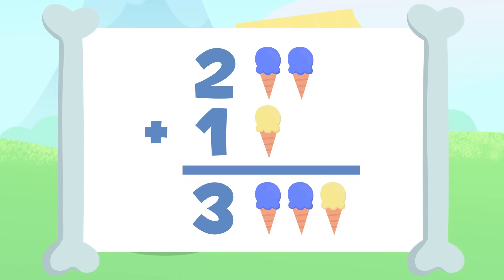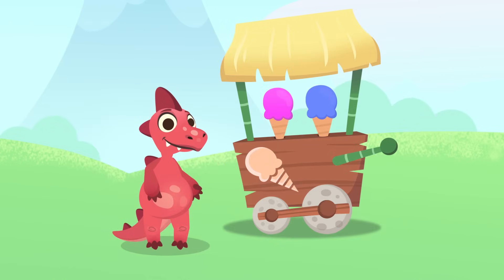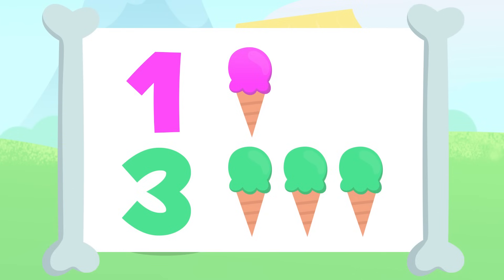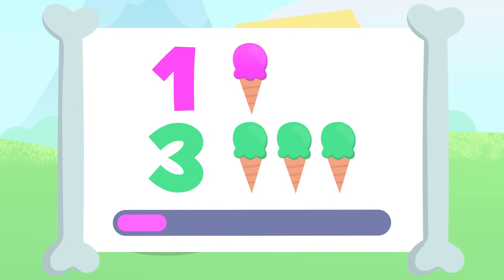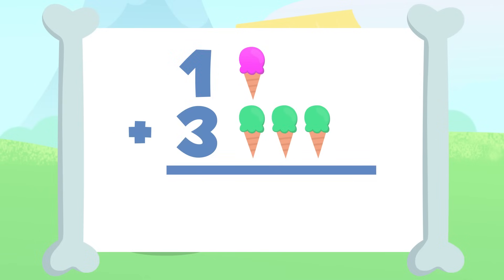Let's try another one. There's one ice cream up here and three down there. Why don't you add them up? Take your time. You got it! If we add these ice creams together, we'll have in total one, two, three, and four. Four! We have four ice creams in total. One plus three equals four.